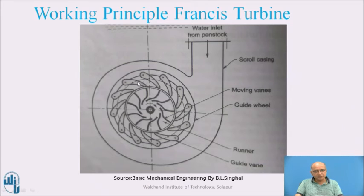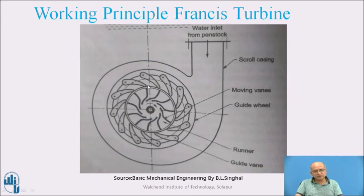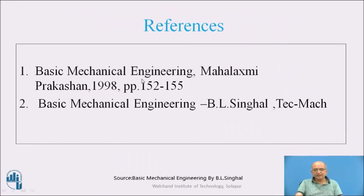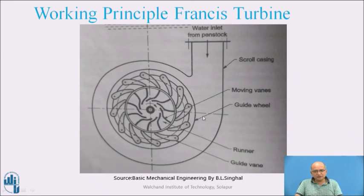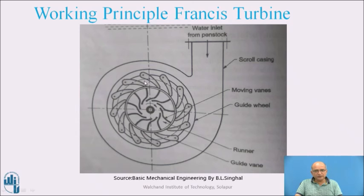We can change the angle or position of the guide vanes, although they are stationary and not rotating. When the angle is reduced, there is enlargement of the cross-section. When the angle is increased, there is a reduction in cross-section. This acts as a convergent shape, helping the water flow to convert its pressure energy into kinetic energy. In addition to this conversion through the casing, further kinetic energy is generated as water passes through the convergent passage between the two vanes.